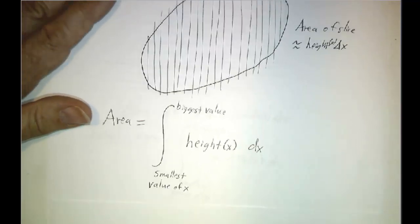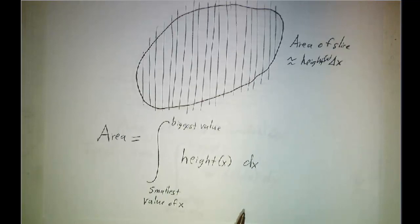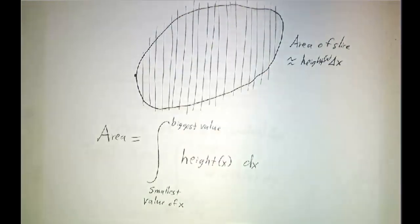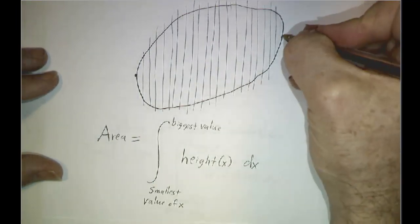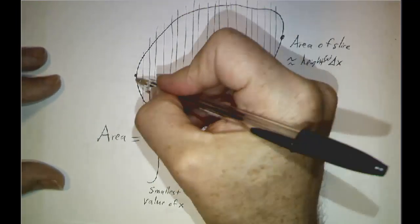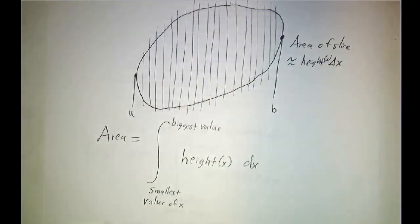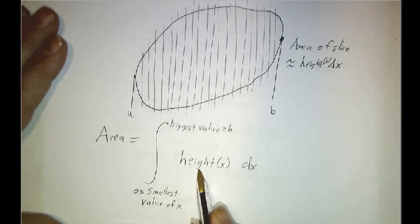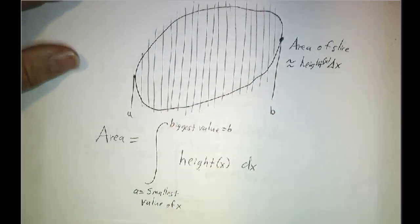So we always get the idea that our area is always the integral from what value of x? Well, from this value of x, from whatever the smallest value of x that appears in your region to this value of x. So this is going to be a and this is going to be b. You can think b for biggest. And then you integrate whatever the height is times dx. And the height is typically the higher curve minus the lower curve.